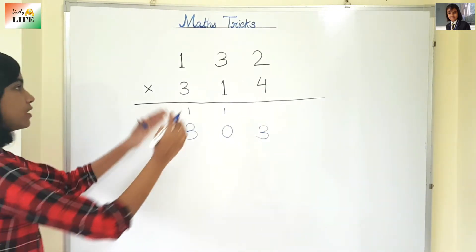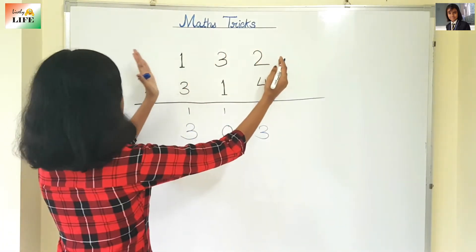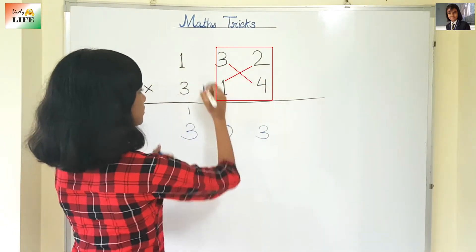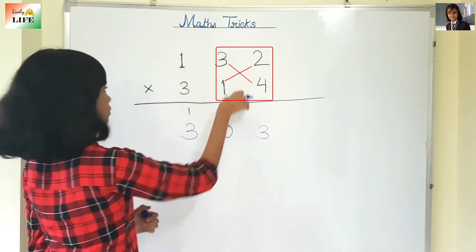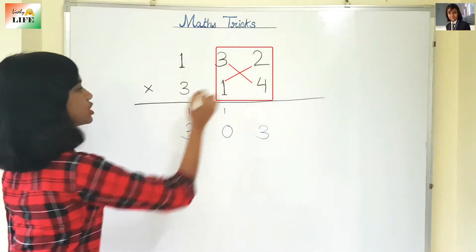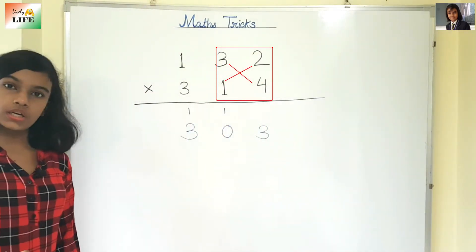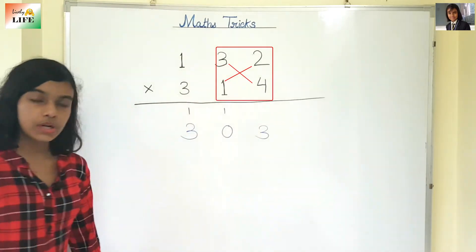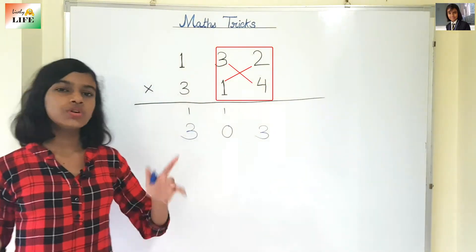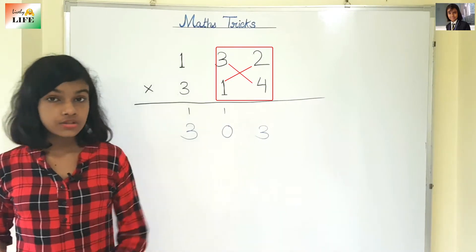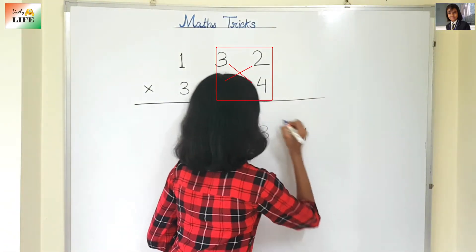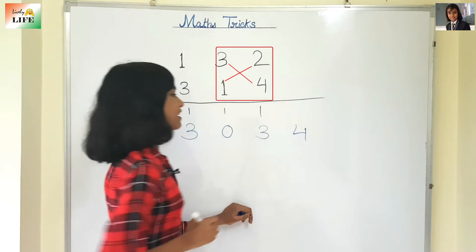Now we move to the next column. Again the same process: 4×3 and 2×1. So 4×3 is 12, plus 2 is 14. We will not write 14 — we will write 4 and carry 1.